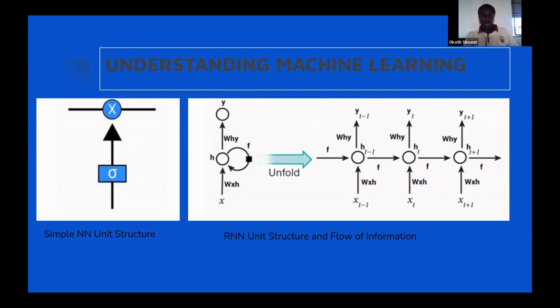This is just trying to compare the simple neural network on the left-hand side that doesn't keep any memory. But for the recurrent network, you can see once it learns, it saves it. The challenge is that it has what we call short-term memory.